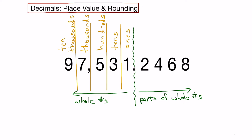Notice that the ending of these columns is always with an S. The columns are named this way because whatever digit is in the ones column, we multiply that by one. In the tens column, we multiply that digit by ten. In the hundreds column, we multiply by a hundred, et cetera. So the part of the number on the left consists of nine ten-thousands, seven one-thousands, five hundreds, three tens, and one one.